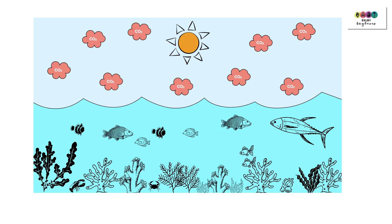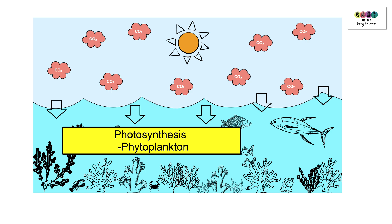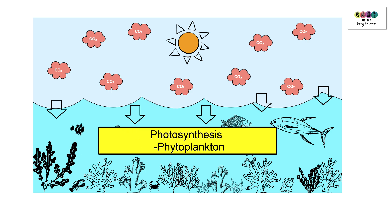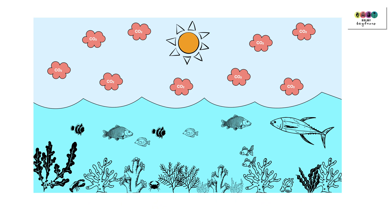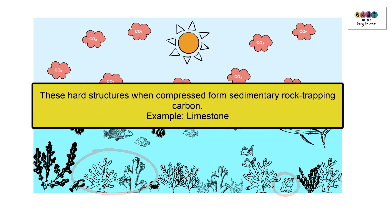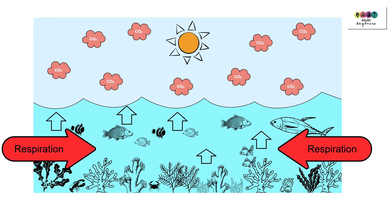The oceans play a hugely significant role in the carbon cycle. A lot of carbon dioxide from the atmosphere gets dissolved in the oceans. Some of this carbon dioxide is used in the process of photosynthesis by microscopic organisms known as phytoplankton. The phytoplankton will be eaten or consumed by other organisms, so the carbon gets passed along the food chain. In some cases, this carbon is used to form coral and shells, which in turn go on to form sedimentary rock like limestone, trapping carbon. There is also respiration carried out in the oceans — all these living creatures respire, releasing carbon dioxide, some of which will make its way back to the atmosphere.